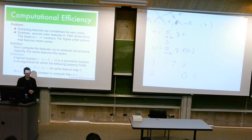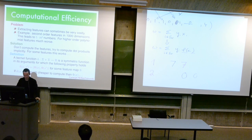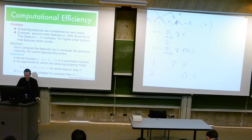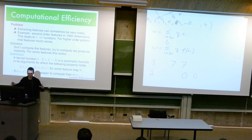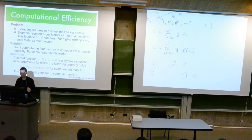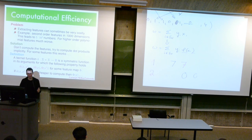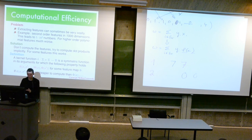Looking at this more in detail: extracting features can be super expensive. Second-order features from 1,000 dimensions is expensive. For higher-order polynomials it gets even worse. So instead of really computing those features, you just try to compute the inner product implicitly. For some features this works — it doesn't work for all of them. We just had a paper at ICML on how to do some of those computations in log-linear time. So you can still work on these problems right now if you want.